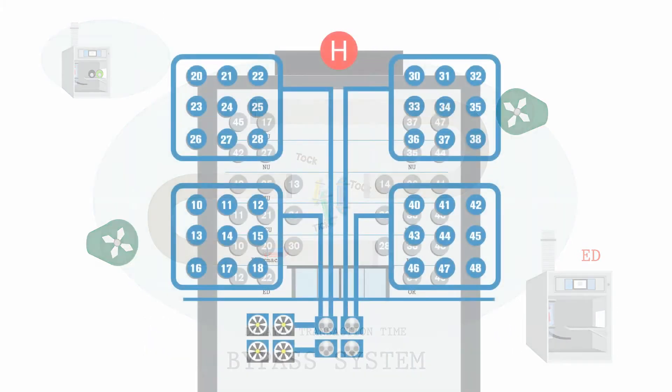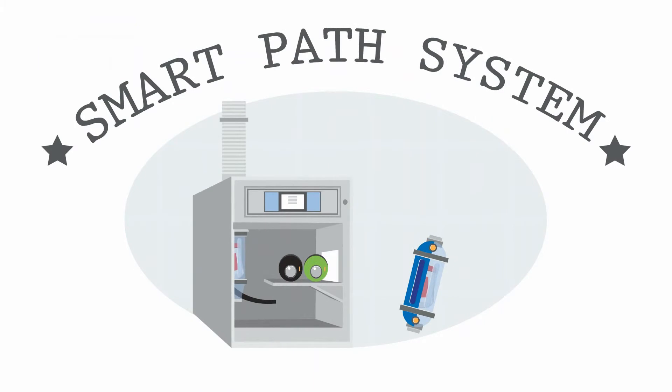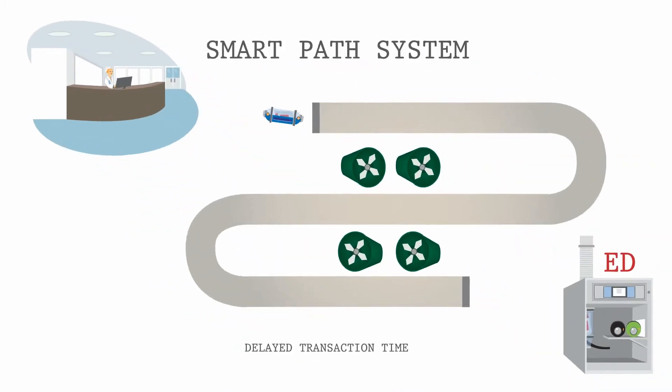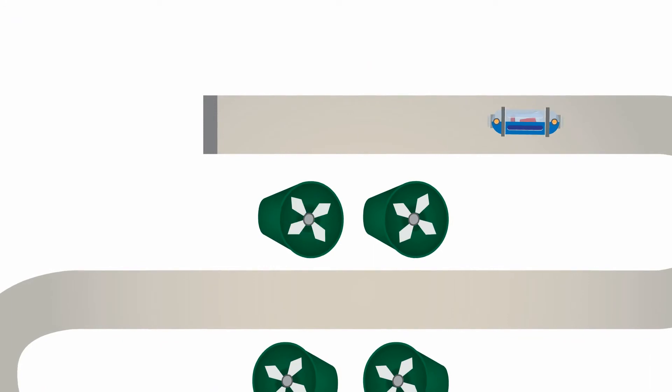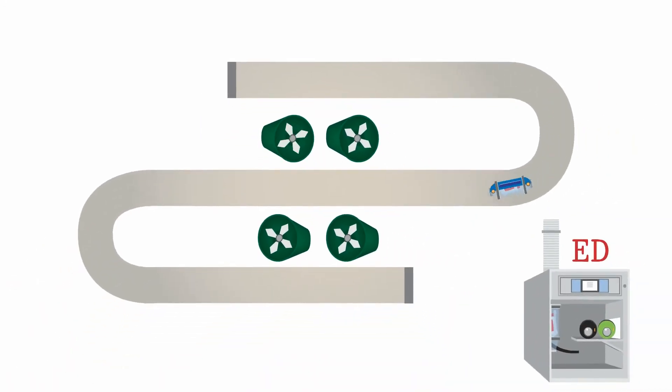Smart path systems speed deliveries by connecting two to six blowers and zones together, so that one blower can handle any delivery from start to finish. With smart path, a carrier only makes one stop, not two or more, and is never parked.